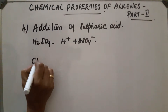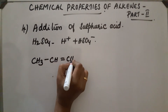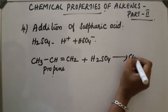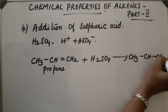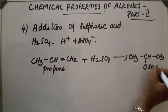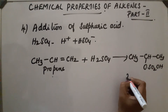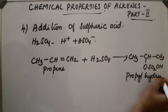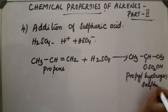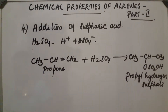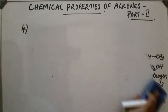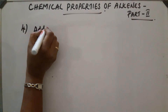Let us take one example: propene, CH₃–CH=CH₂. Propene on reaction with H₂SO₄ gives a product where HSO₄ gets attached, giving propyl hydrogen sulfate. So the product obtained is propyl hydrogen sulfate. This is the addition of sulfuric acid.